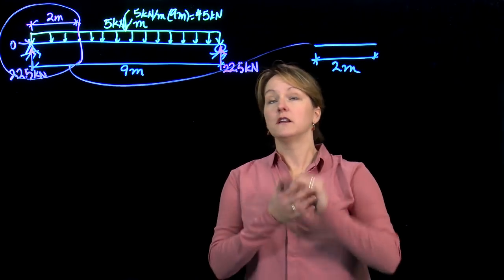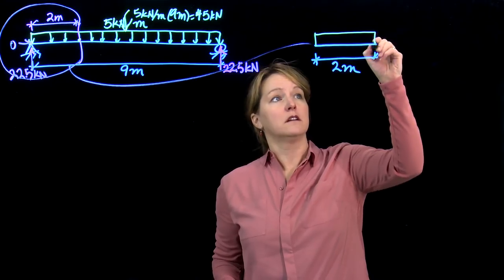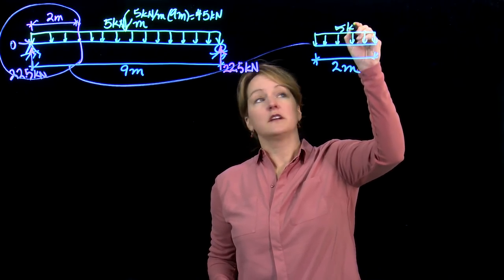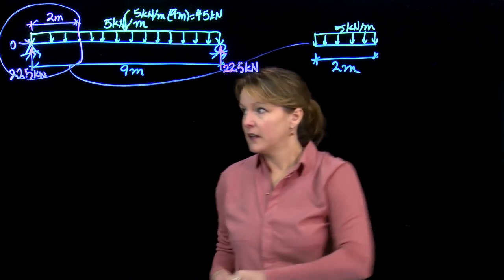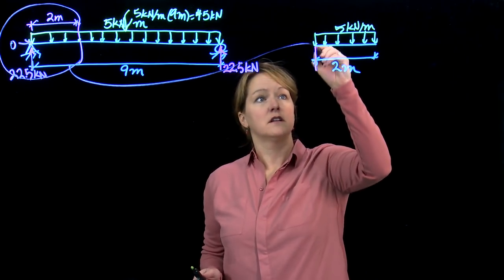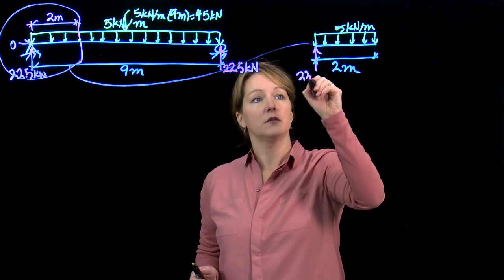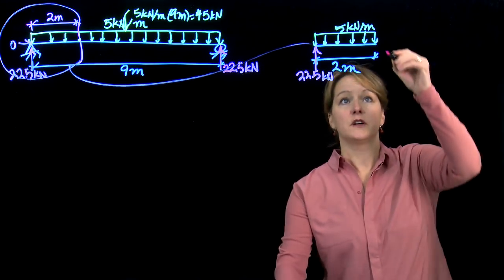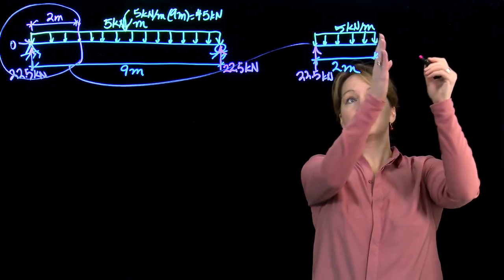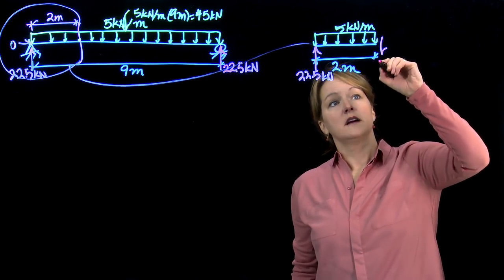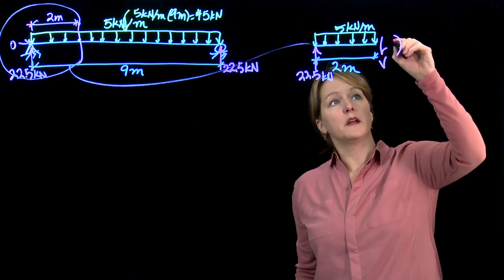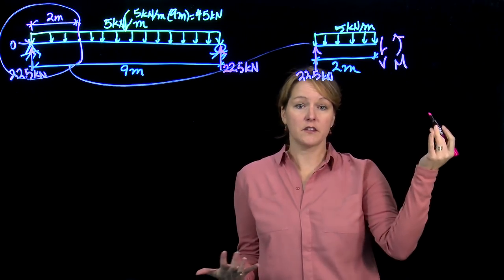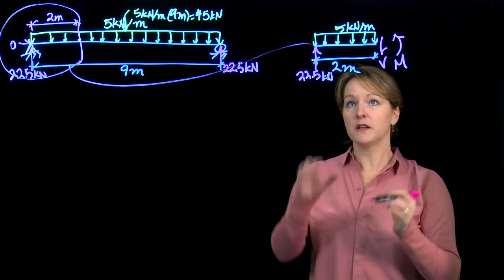Let's look at this 2 meters long section. I still have the applied load on it, which is 5 kilonewtons per meter, and I have my reaction force, which is 22.5 kilonewtons. What I'm looking for is when I made this cut, I exposed the beam inside. I need to calculate the shear force V and the bending moment M. Now I'm back to just doing equilibrium on this little piece.